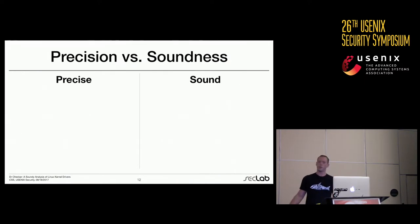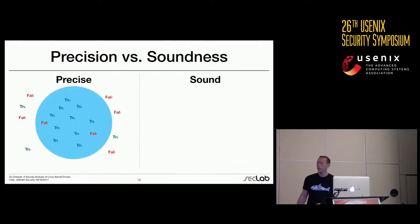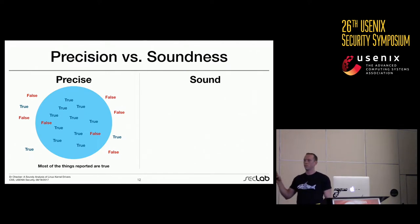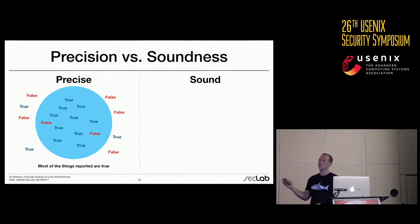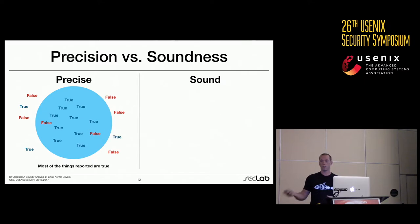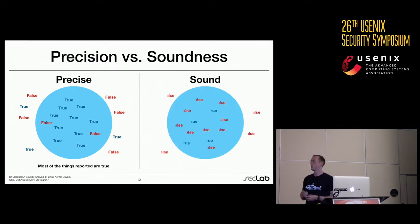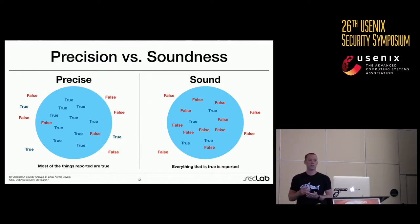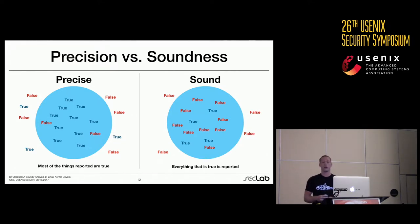The fundamental problem in static analysis is precision versus soundness. If you have a precise analysis, most results returned are true positives, but you'll miss some true bugs — you get high accuracy. In a sound analysis, everything that is true is returned — no bugs are missed — but you get a ton of false positives. You could end up digging through hundreds of thousands of warnings just to find three bugs.